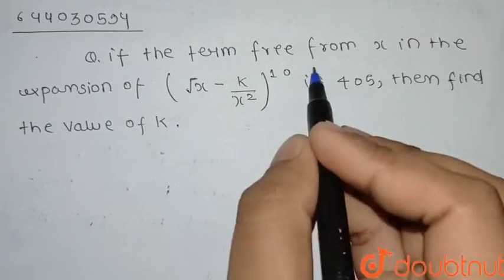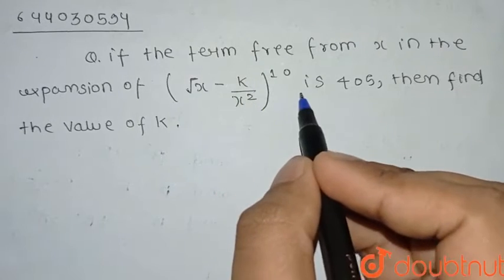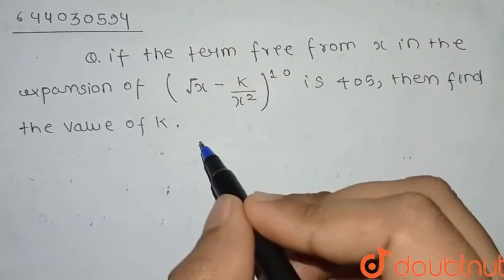So guys, our question is: if the term free from x in the expansion of (√x - k/x²)¹⁰ is 405, then find the value of k.